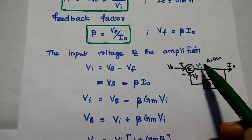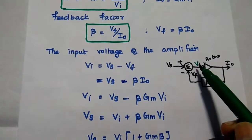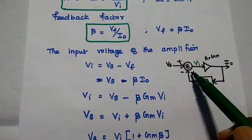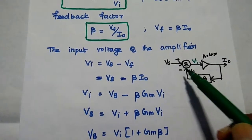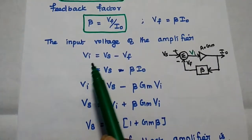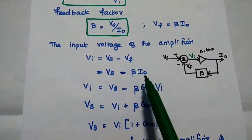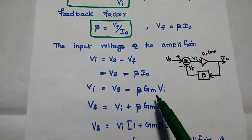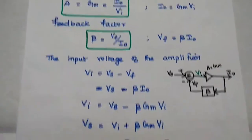From this, we can get the value of VI. VI is the actual input voltage to this amplifier. That can be obtained by subtracting the feedback voltage from the source voltage. Since we are using negative feedback, we subtract Vf from the source voltage. So VI is equal to Vs minus Vf. Then we can replace Vf with the value beta IO, and IO can be replaced with the value Gm into Vi.